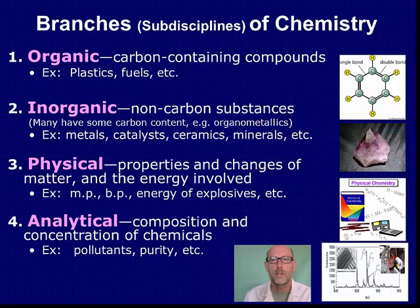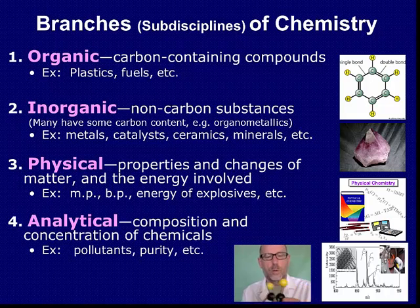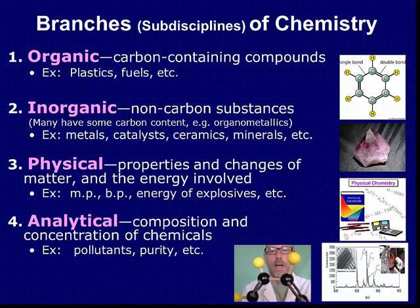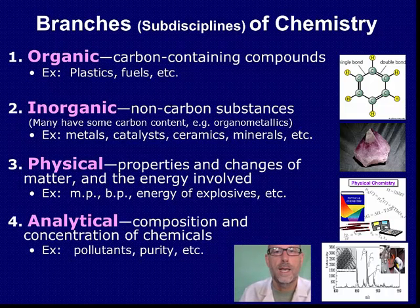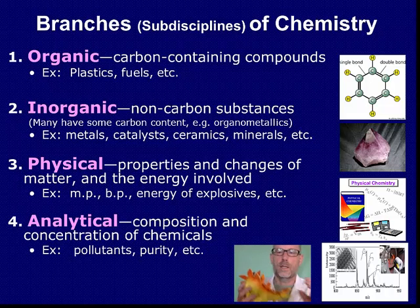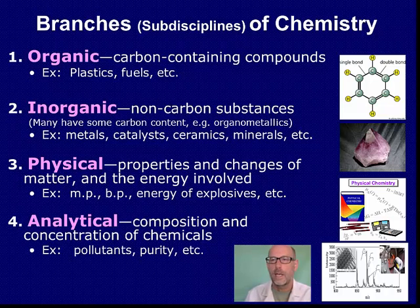The first branch of chemistry is called organic chemistry, and it involves carbon-containing compounds. There's a famous molecule called benzene that consists of six carbon atoms with six hydrogen atoms. Because there are so many carbon atoms in this molecule, we consider it an organic chemical. So plastics — such as the plastic that makes up this dinosaur — and fuels such as octane in gasoline, those would be organic chemistry.